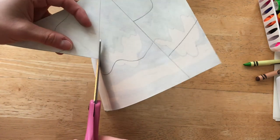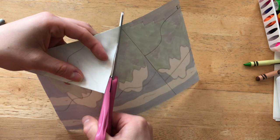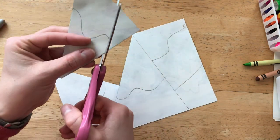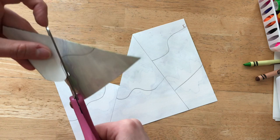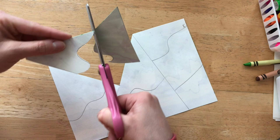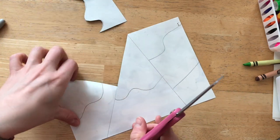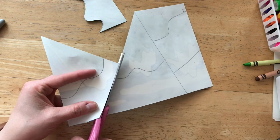When I need to turn my paper to cut a new line, I use my helper hand and I don't turn my scissors. My scissors are always pointed away from me, even when I have these silly curvy lines to cut. I'm still going to use my scissors the right way.